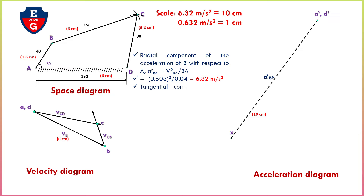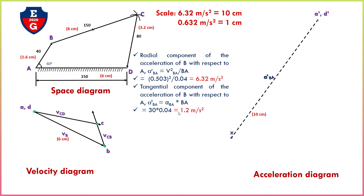Now find the tangential component of the acceleration of B with respect to A. The tangential component equals alpha BA multiplied by BA. Alpha BA is given as 30, and BA equals 0.04 meters, giving a tangential component value of 1.2 meter per second square. Tangential components are always drawn as a perpendicular line to the radial component. Draw a 90 degree line of 1.9 centimeters for the tangential component, converting 1.2 meter per second square according to the assumed scale. From this we find point B dash.